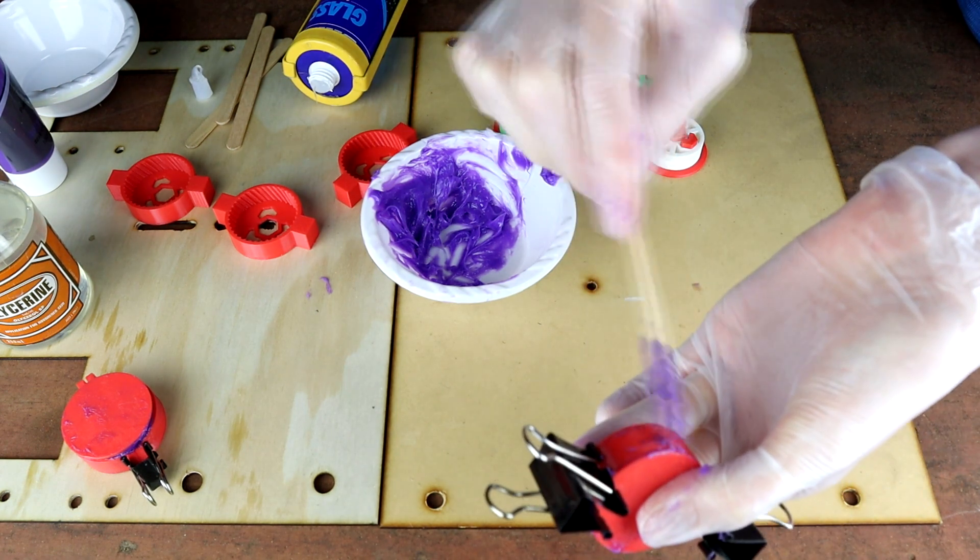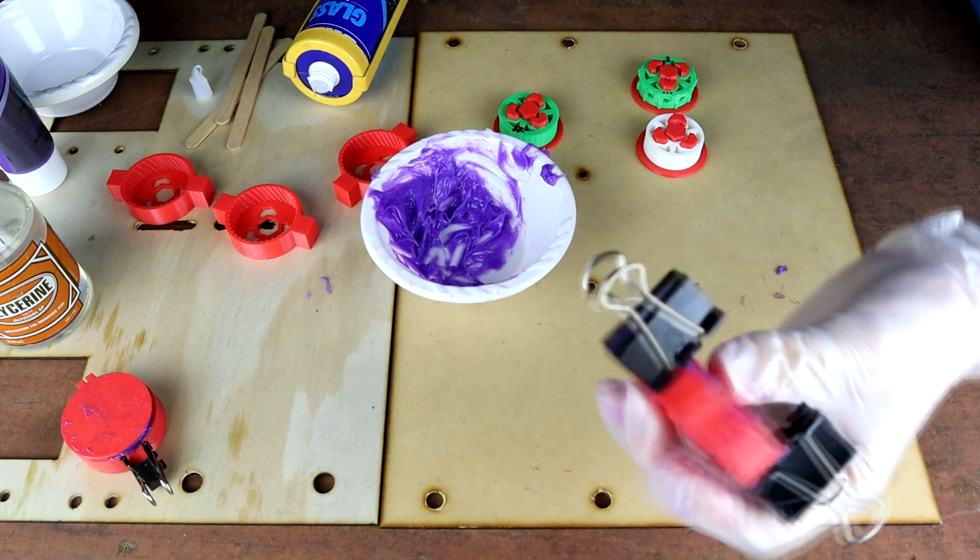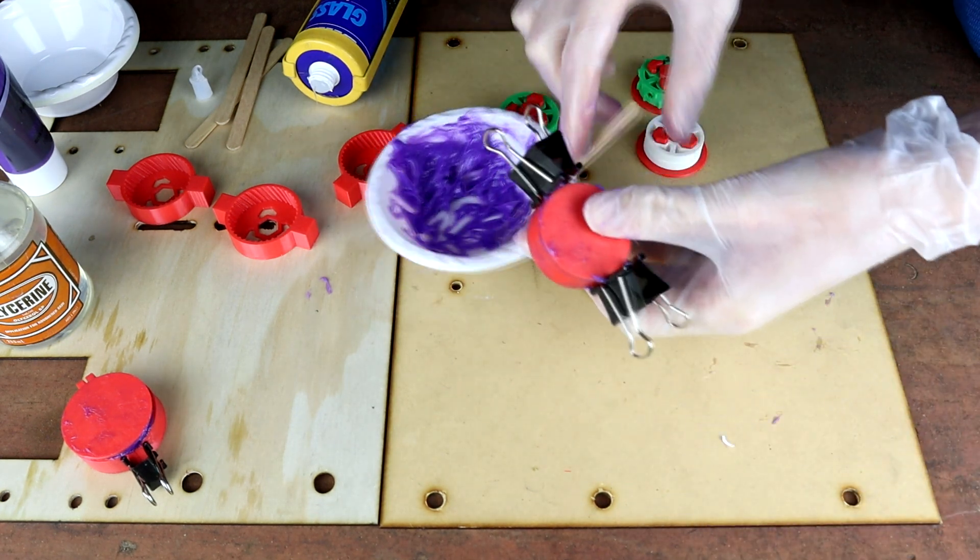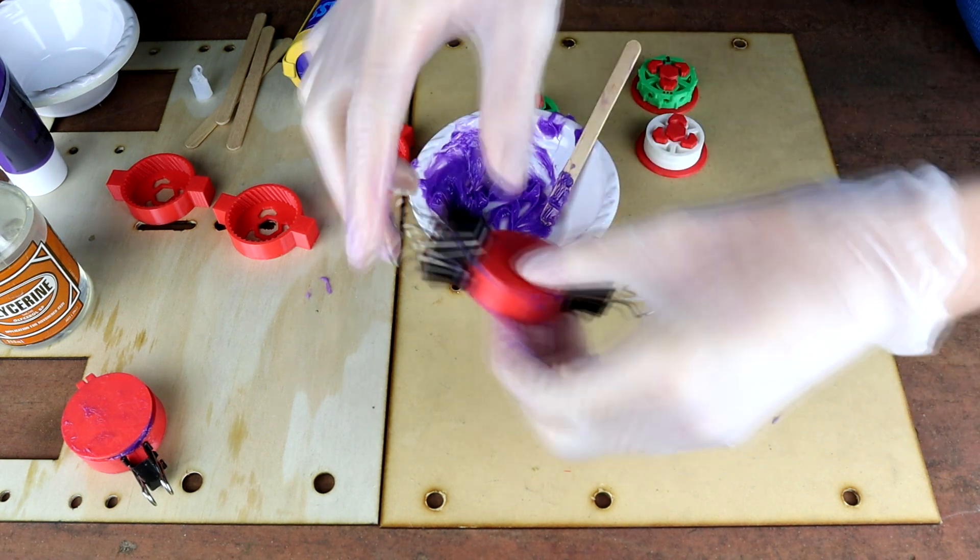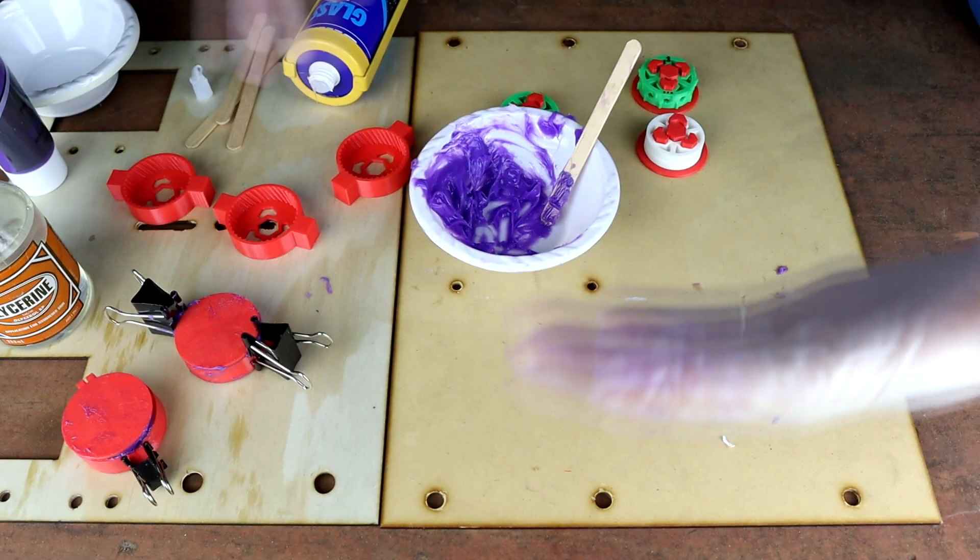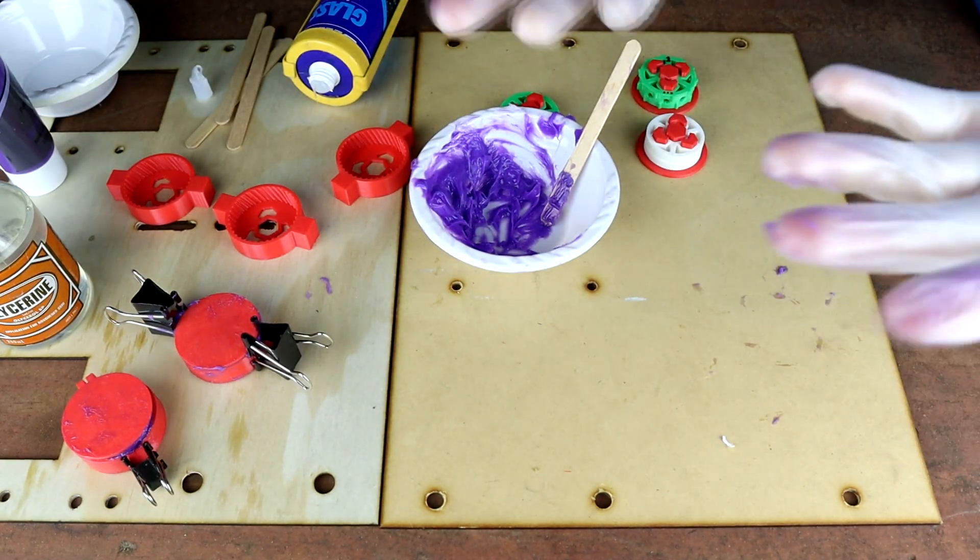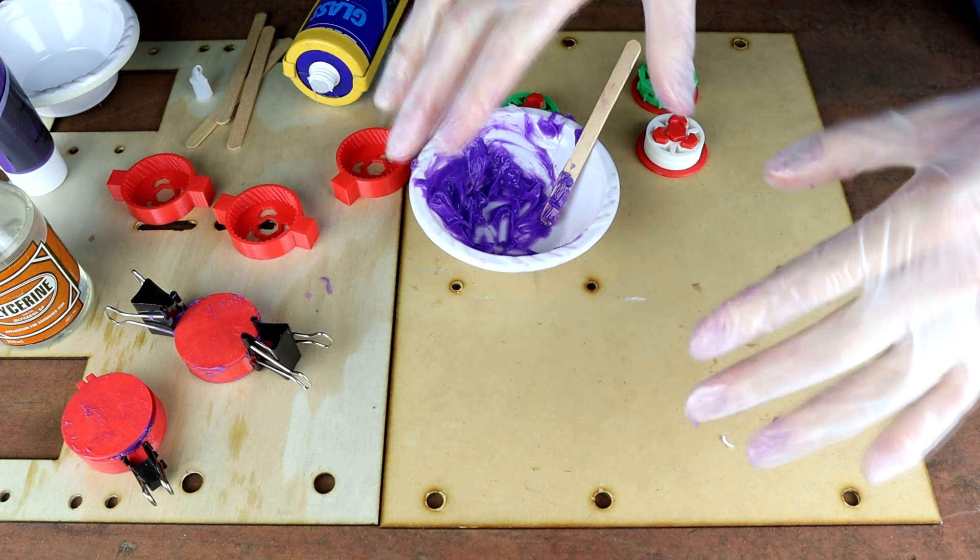We're just going to quickly knock a bit of that squeeze out off because anything we don't knock off we're going to have to cut off later. That we'll just about do that one and the squeeze out is good. You want a little bit of squeeze out because it means your mold is full and you will actually compact some air bubbles by getting some squeeze out. So that's a good start. All right I'm going to make the rest of these up and then we're going to come back in 12 hours to demold.